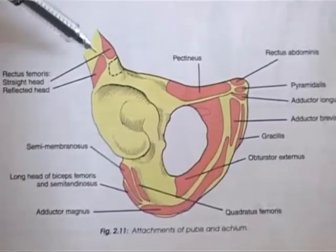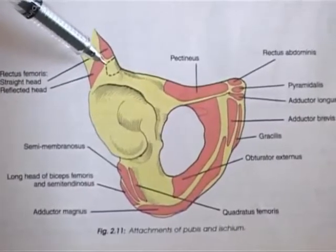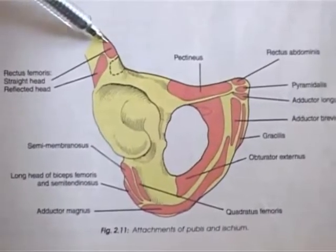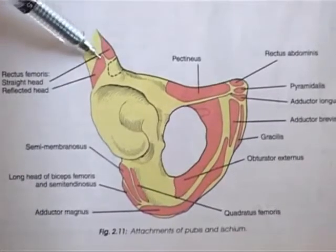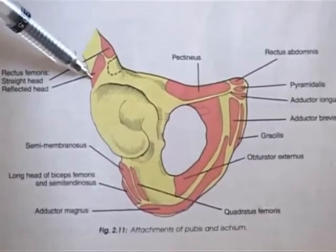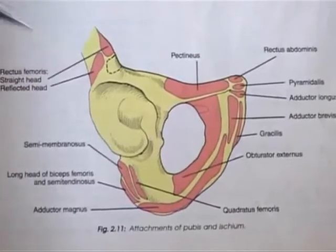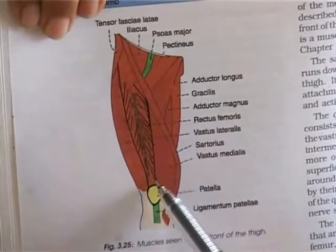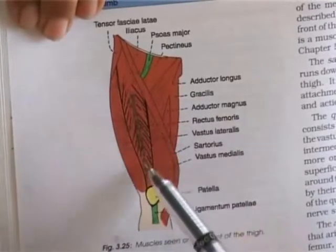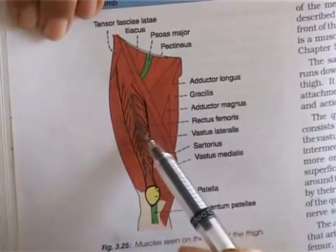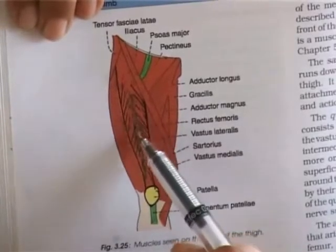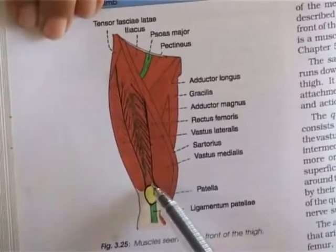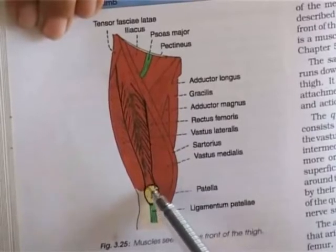The anterior inferior iliac spine gives attachment to the straight head of rectus femoris in the upper part, and the reflected head is just below, just above the acetabulum. Rectus femoris lies anterior to the vastus intermedius and is typically bipennate in nature, with the tendon in between and fibers going downwards, medially and laterally. This muscle is inserted into the upper border of the patella.